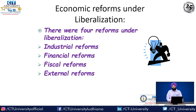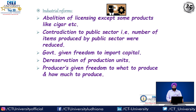The economic reforms under liberalization can be divided into four categories: industrial reform, financial reform, fiscal reform, and external reform. Industrial reforms included the abolition of licensing except for some harmful products such as cigars. The number of items produced by the public sector was reduced, the government gave freedom to import capital, and there was de-reservation of production units.